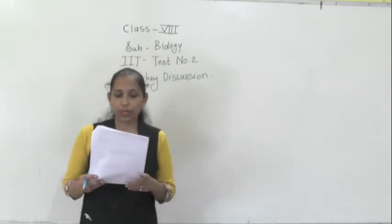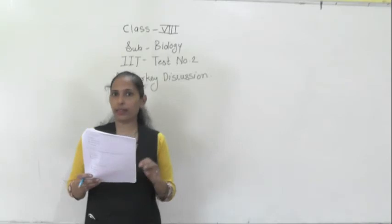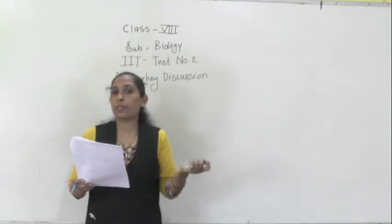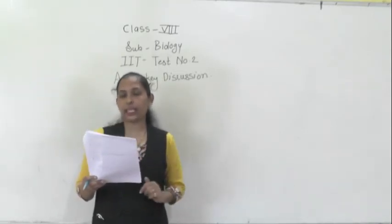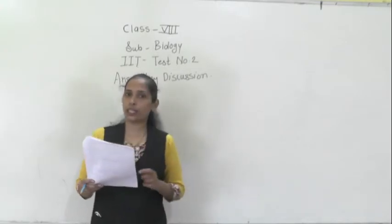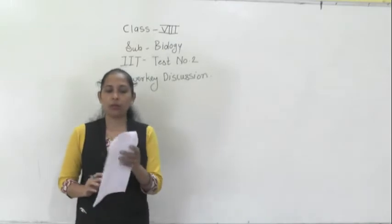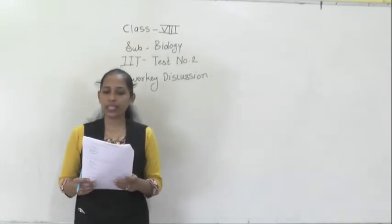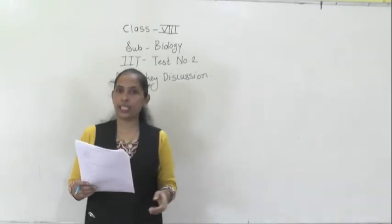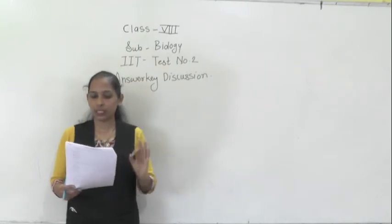The correct option for question three is option B, that is red blood cells. In red blood cells there is absence of nucleus. Also in mature sieve tube cells and bacterium cells, the nucleus is absent. Question number four: the nucleus contains DNA, RNA, and proteins, so option number C is correct.